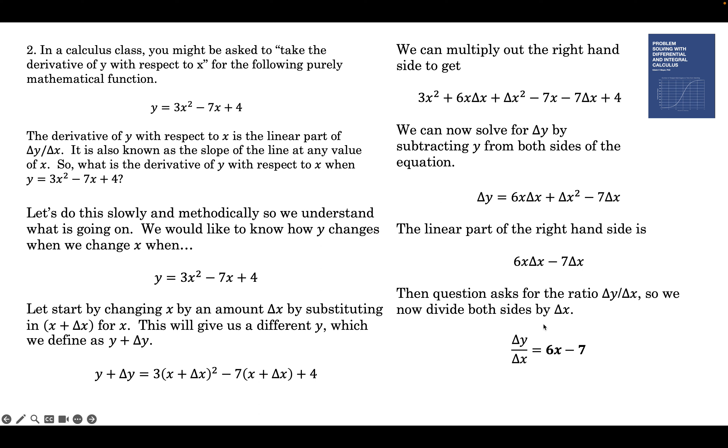And if you know how to take derivatives, then you know this is the right answer. For Δy over Δx, that's the linear part. So let's check it to make sure we understand. That's the Δy over Δx. The ratio of a change in y to a change in x. 6x minus 7. So let's pick an x and a small Δx to see if this is true.